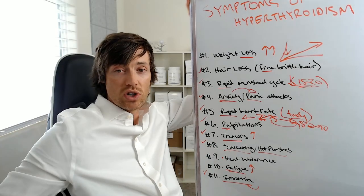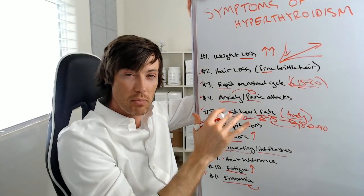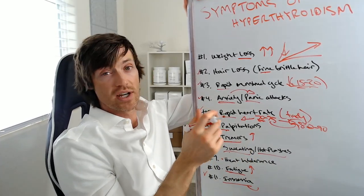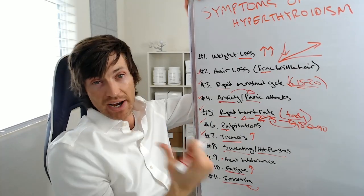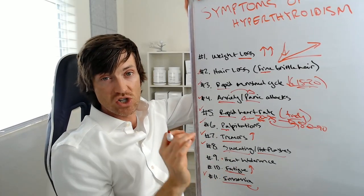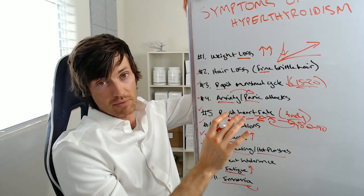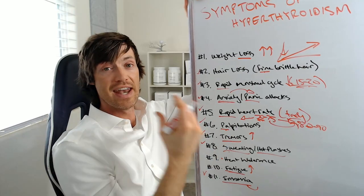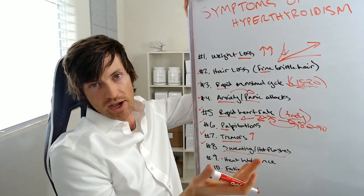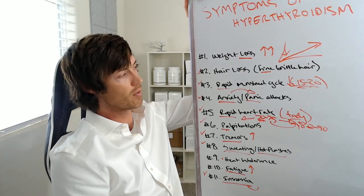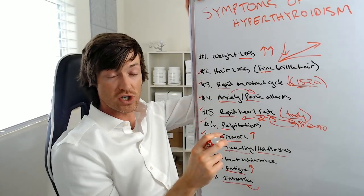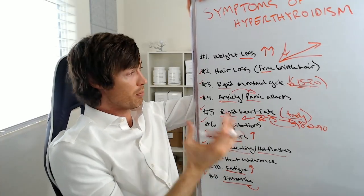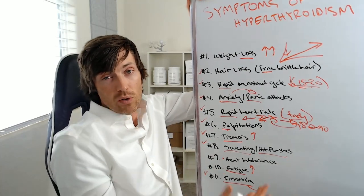You really need to understand the difference between the hyperthyroid state and the hypothyroid state, because regardless of the thyroid condition you have, you're going to require some fine tuning in terms of your medication dose or whatever other therapy you're using. Your body typically does a really good job; doctors typically do a very poor job — medication is not a replacement for the natural regulation of your thyroid hormone. So understand these symptoms so that you know how to adjust your medications if necessary, or just so you know what's happening in your body. Let me know in the comments if you have any questions.